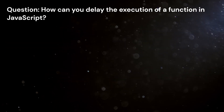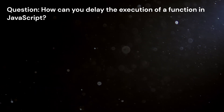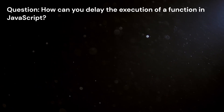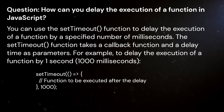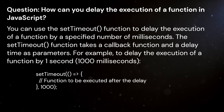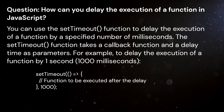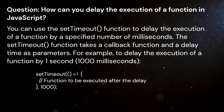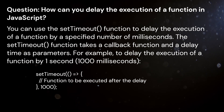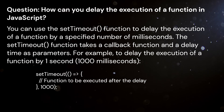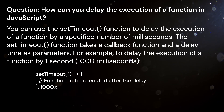Question: How can you delay the execution of a function in JavaScript? Answer: You can use the setTimeout function to delay the execution of a function by a specified number of milliseconds. The setTimeout function takes a callback function and a delay time as parameters. For example, to delay the execution of a function by one second, 1,000 milliseconds.